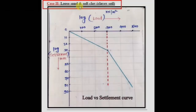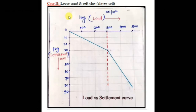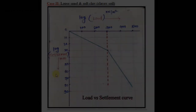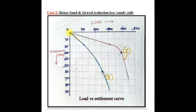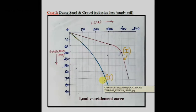Now let's see Case 2 for loose sand and soft clay. From the plate load test results, a logarithmic graph is drawn for load and settlement. Load is taken on the x-axis and corresponding settlement on the y-axis. The load vs settlement curve for clay soil is very smooth, does not show any sharp point, and settlement is very gradual. The soil shows progressive settlement and at a point settlement becomes constant, with the graph becoming almost a vertical line.